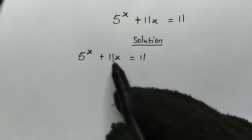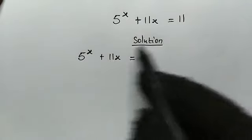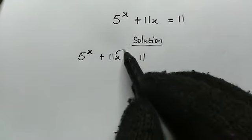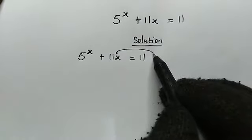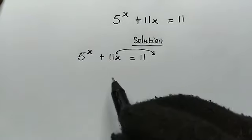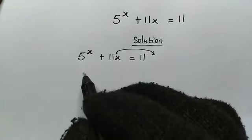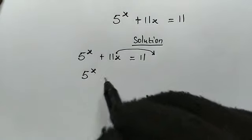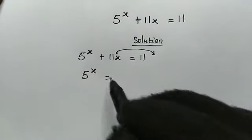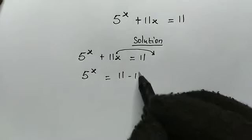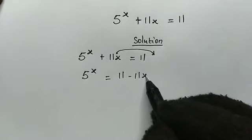From here, let's move this positive 11x to the right. So if you move this to the right, it will become negative. So we have here 5 to the power of x, this is equal to 11 minus 11x.